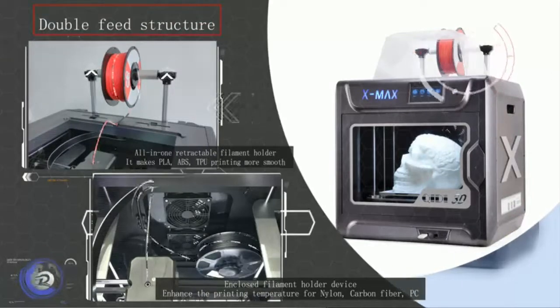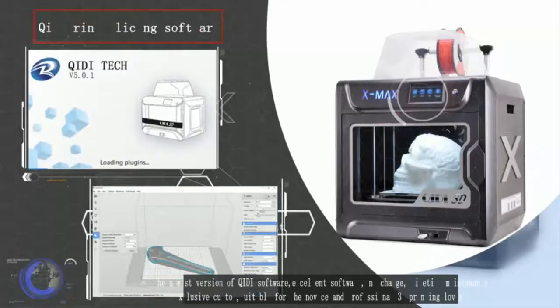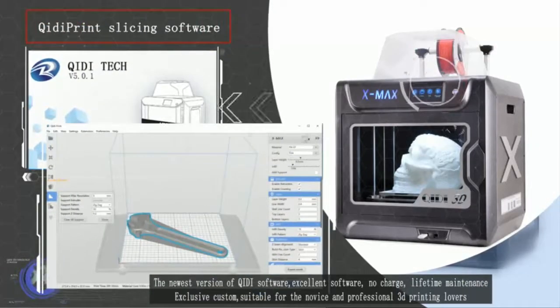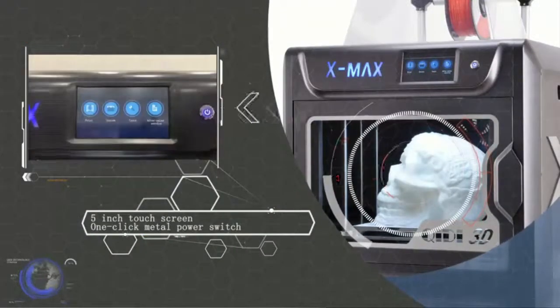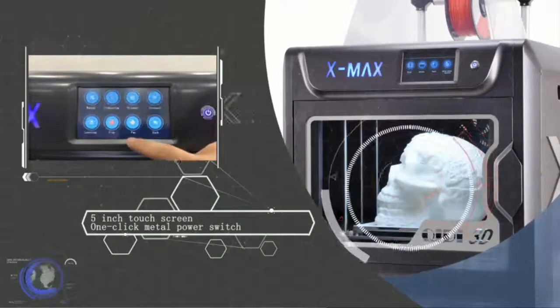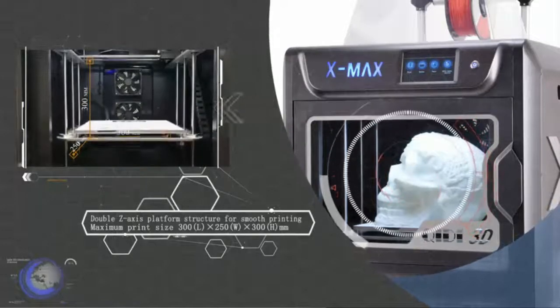Through continuous user feedback, we continue to iterate on the technology. At least two technical upgrades a year, including software, mechanical structure, core accessories, and extruder. Kiti Tech hopes to create value for users, create a better product user experience, and build the best brand of 3D printers in the world.